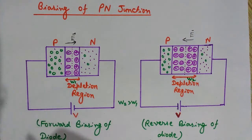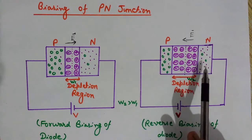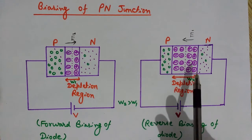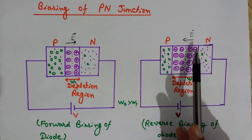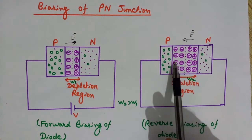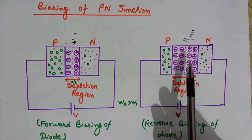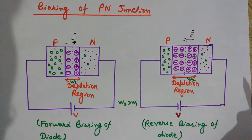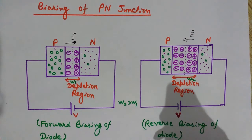But if we keep on increasing the voltage, then at some stage it creates an electric field that is high enough to break the bonds of the electrons. Electrons and holes are produced in large amount, and this condition where the structure of the atom breaks and electrons are released is known as the breakdown of the diode.